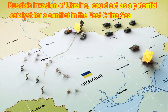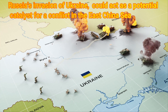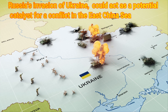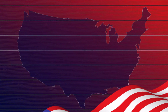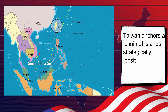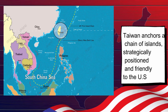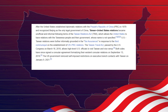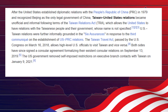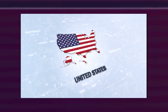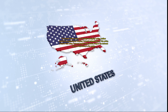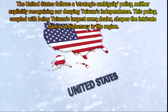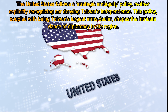Some observers link the tension between China and Taiwan to global events such as Russia's invasion of Ukraine, suggesting it could act as a possible catalyst for a conflict in the East China Sea. From a US perspective, Taiwan plays a crucial role — it anchors a chain of islands strategically positioned and friendly to the US, serving as leverage against China's expansion plans. Although the US lacks official diplomatic ties, the Taiwan Relations Act of 1979 obligates the US to provide defense capabilities. The US follows a strategic ambiguity policy, neither explicitly recognizing nor denying Taiwan's independence, and is also Taiwan's largest arms dealer.